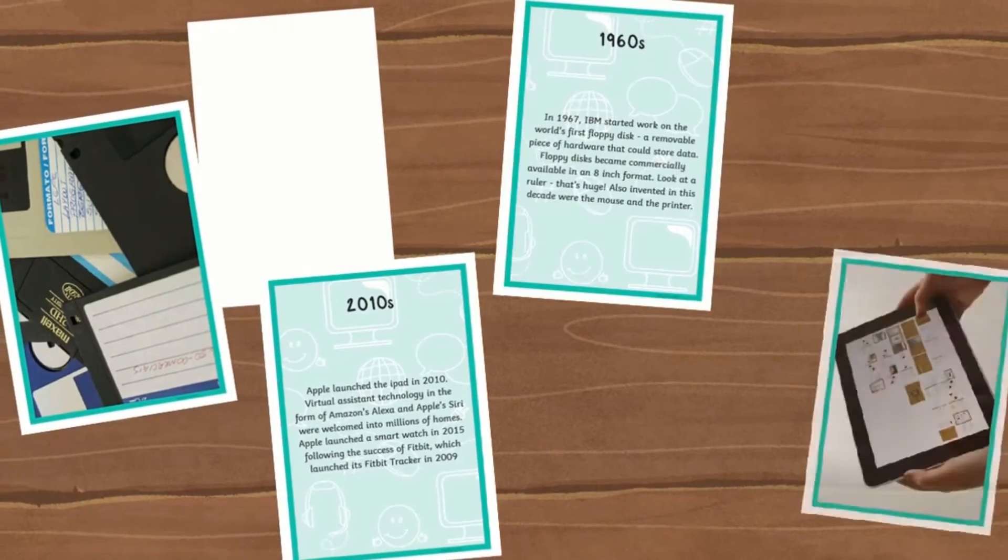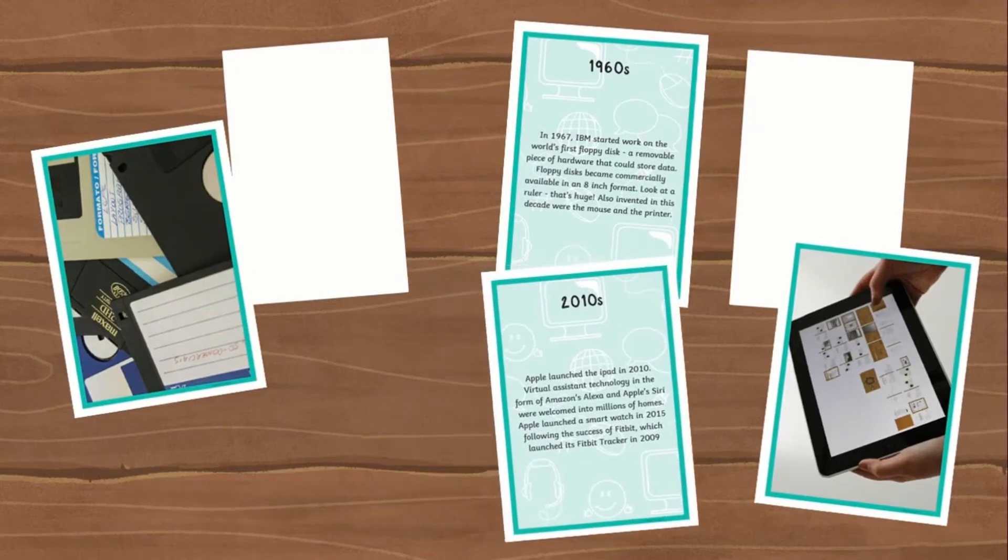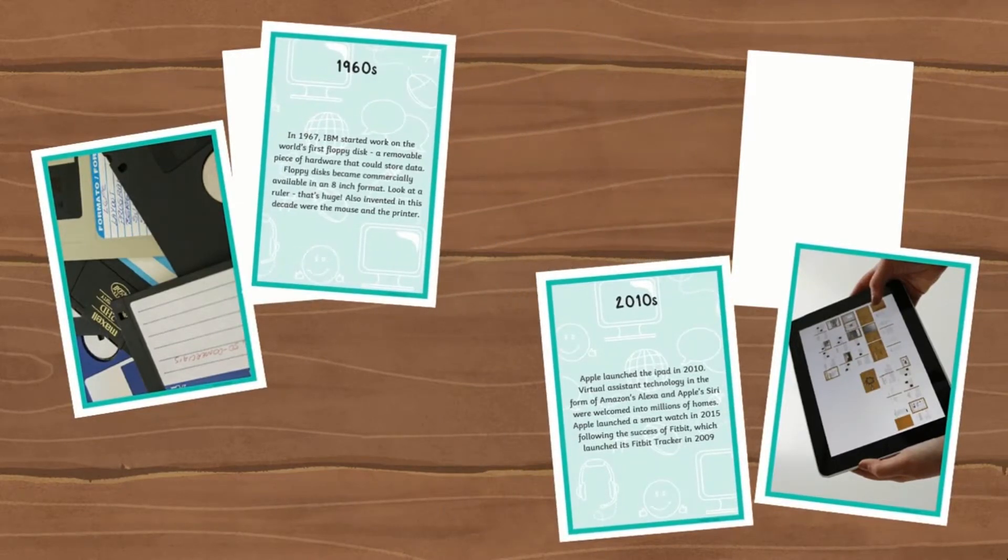Simply cut out the pictures and definition cards, place them down and give them a shuffle. Encourage your children to turn them all over and match them together. This is a great way for children to see the progression of technology over the years.